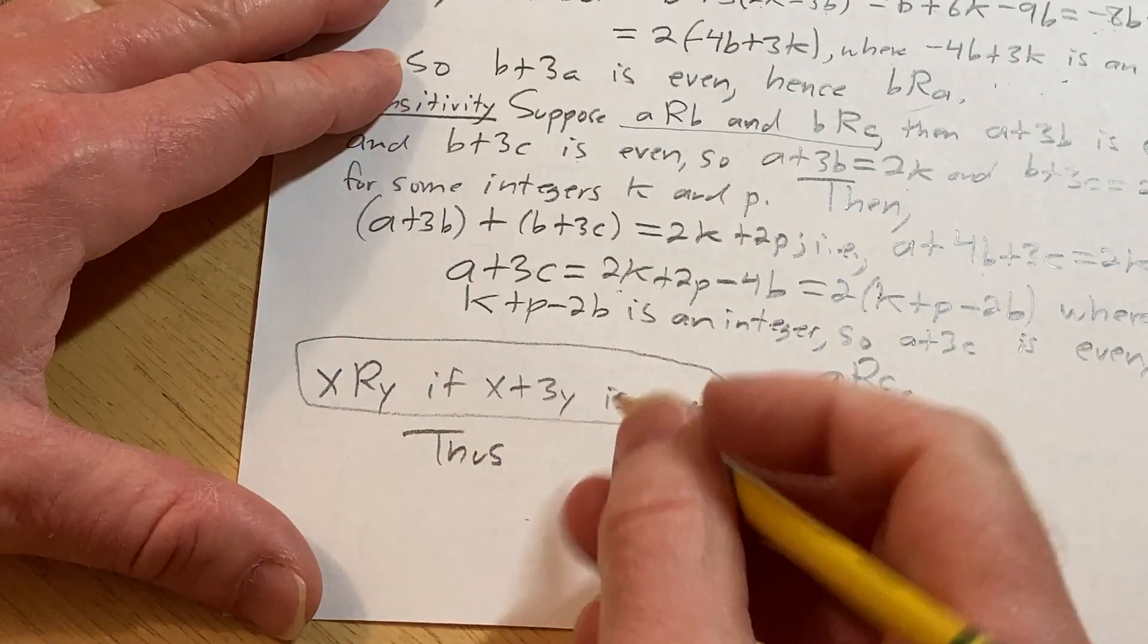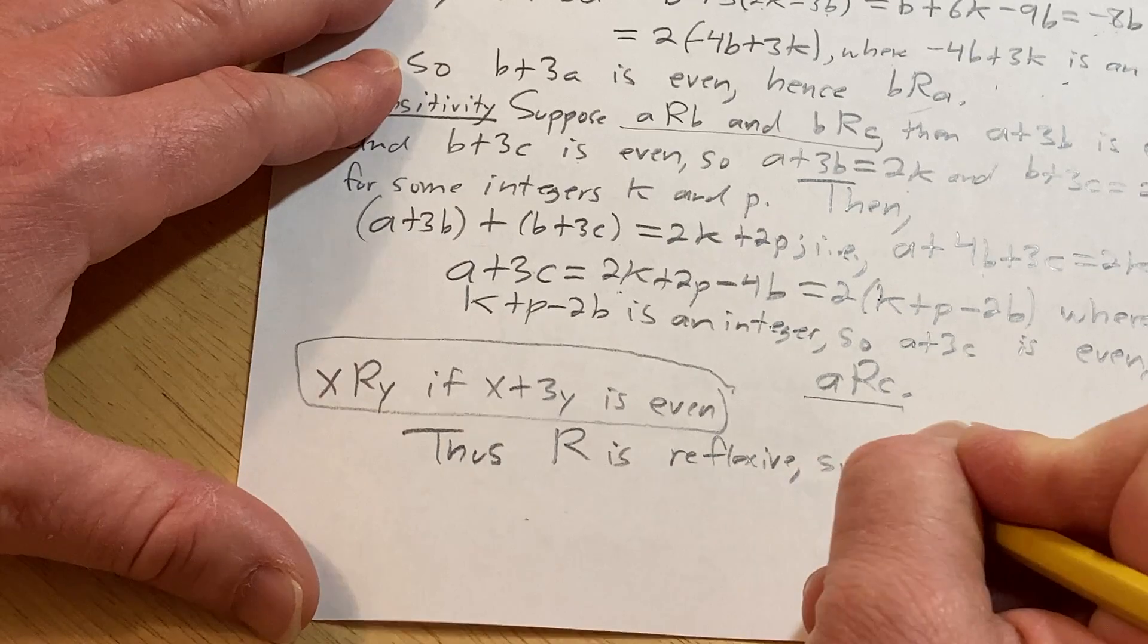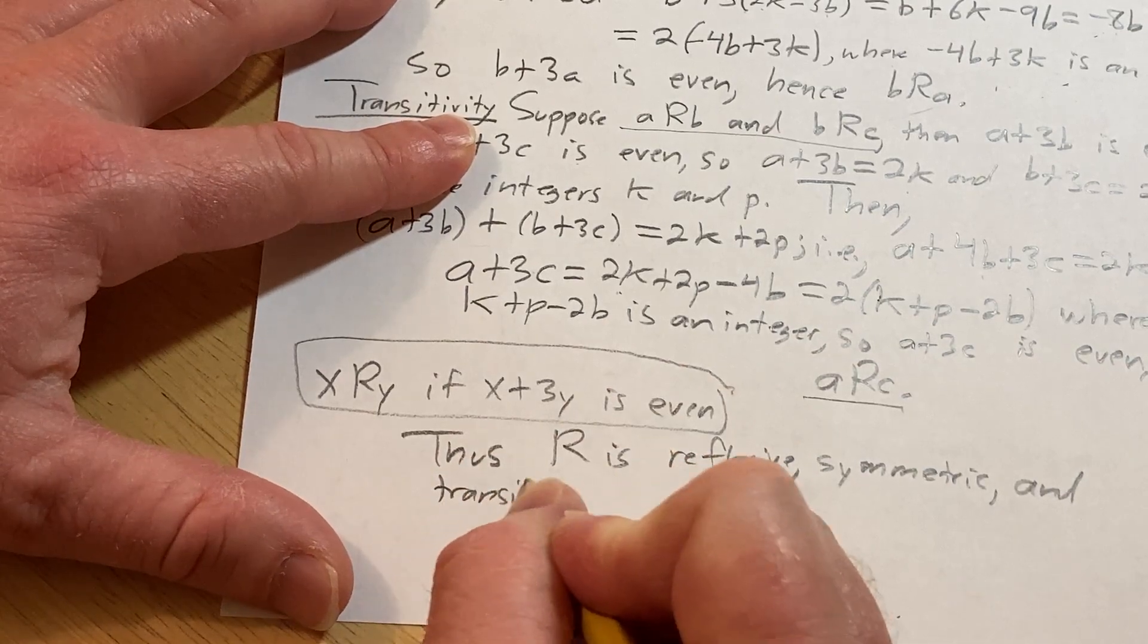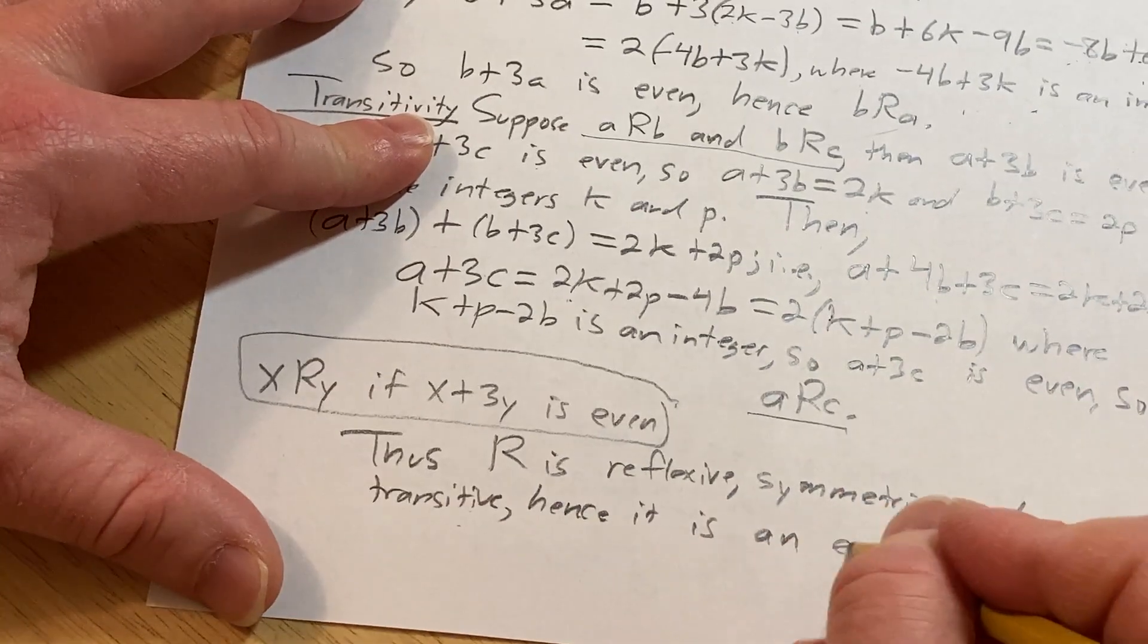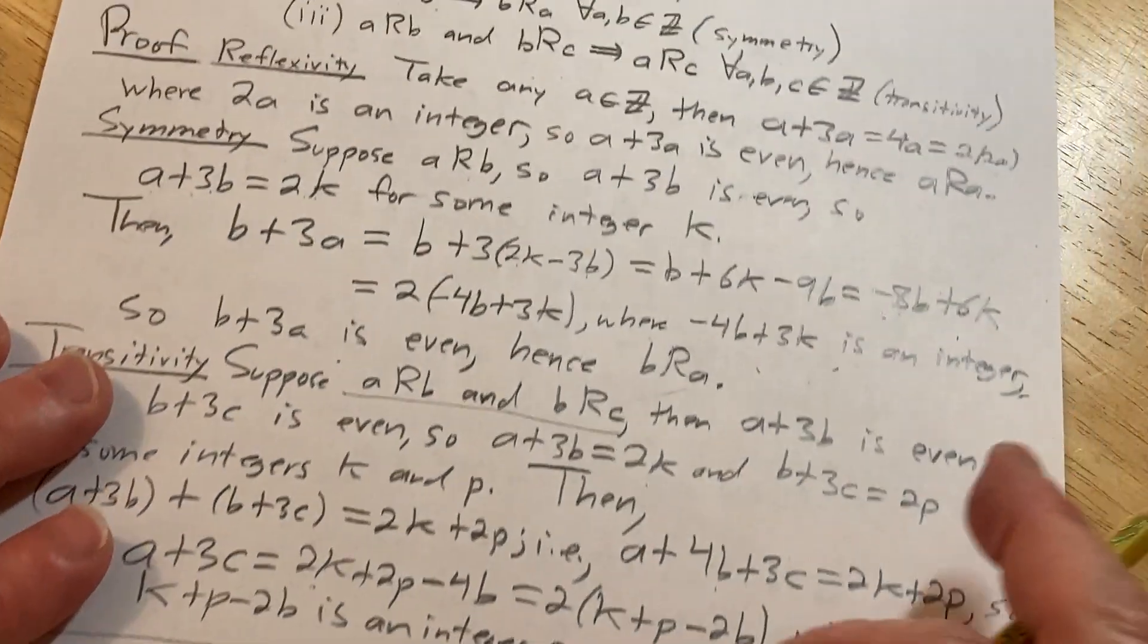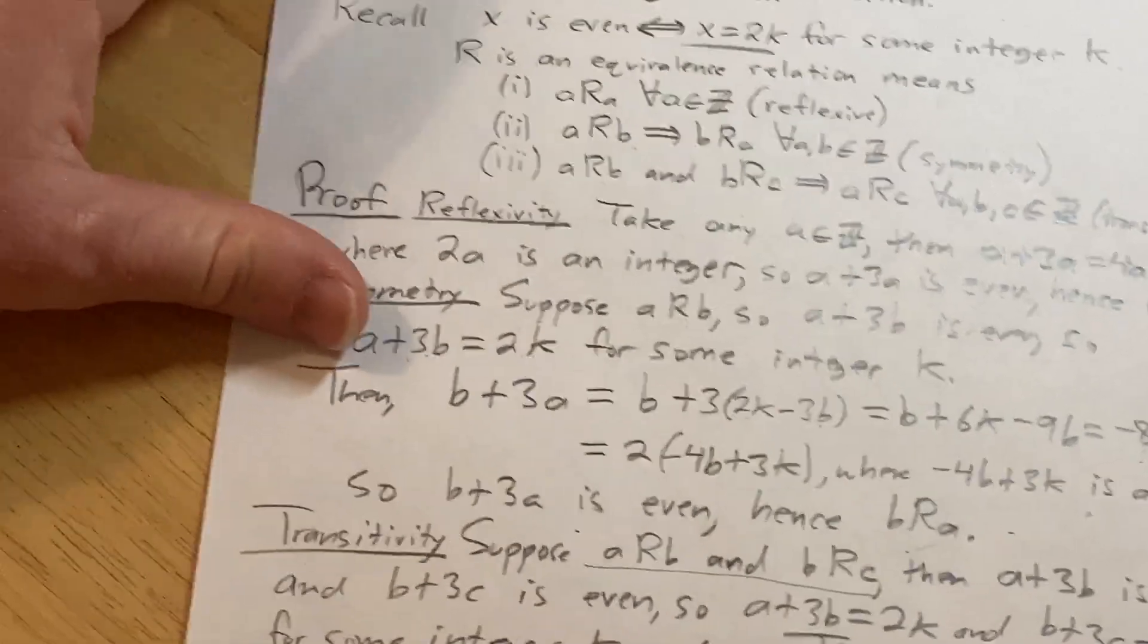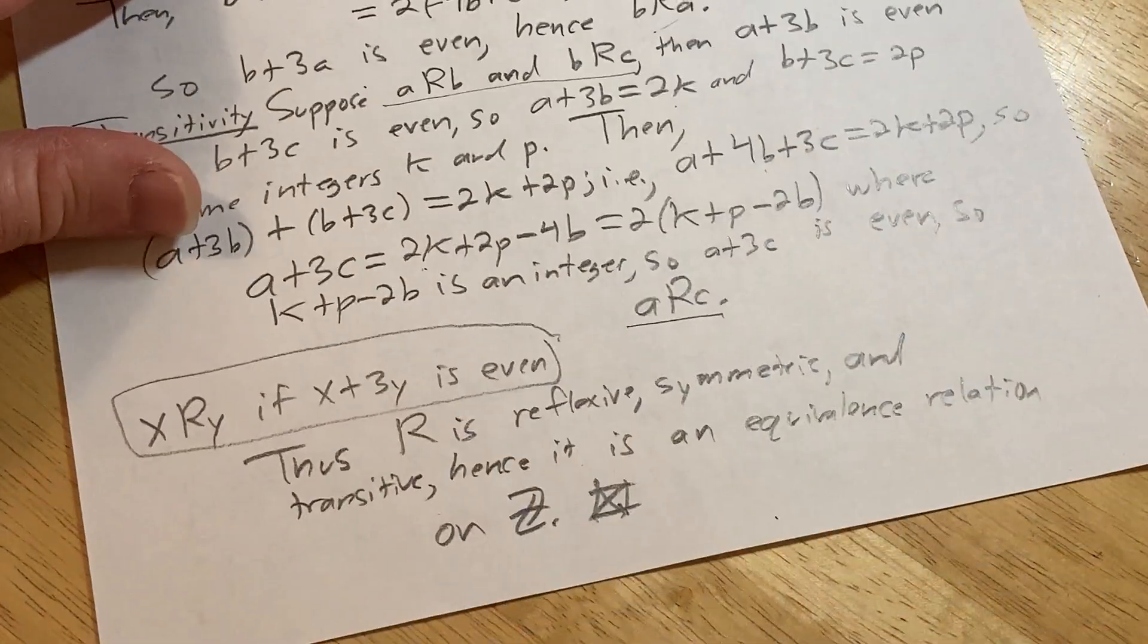Thus R is reflexive, symmetric, and transitive. Hence it is an equivalence relation on Z. And that completes the proof. That's how you show a relation is an equivalence relation. It's a lot of writing, not hard, but it does take some knowledge. I hope this video has been helpful. Good luck.